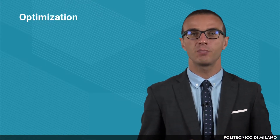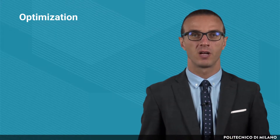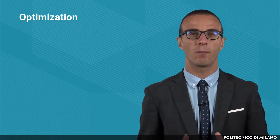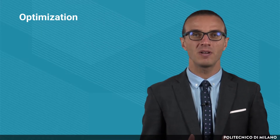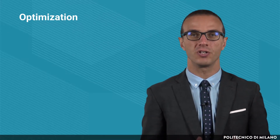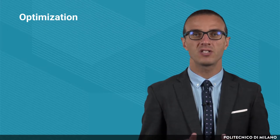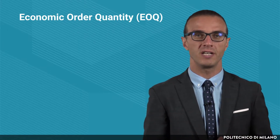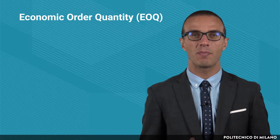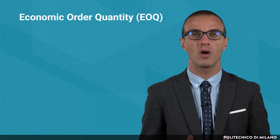In the previous lectures we saw two inventory management models: the reorder point and the periodic review ones. The topic of this lecture is the optimization of both these models. With regard to the reorder point model, the optimization consists in finding the optimal fixed quantity to be ordered. This quantity is called EOQ, Economic Order Quantity, since it is calculated by minimizing the sum of the relevant costs.